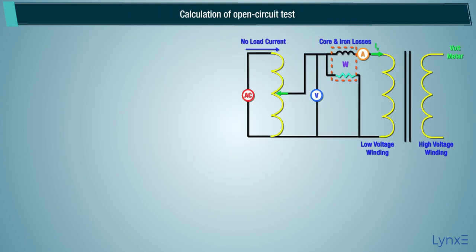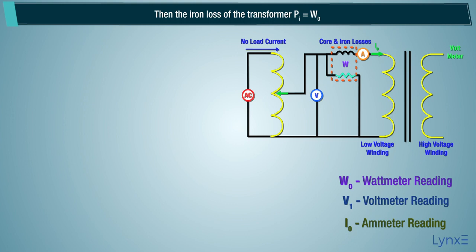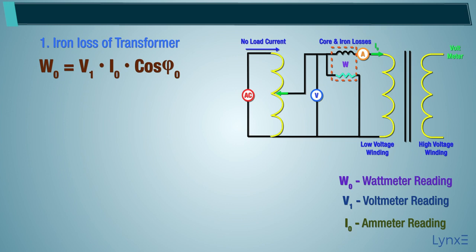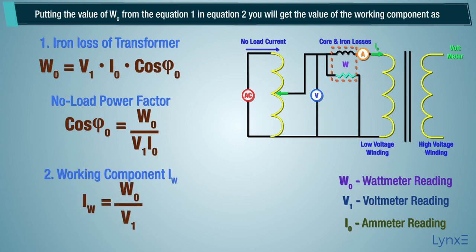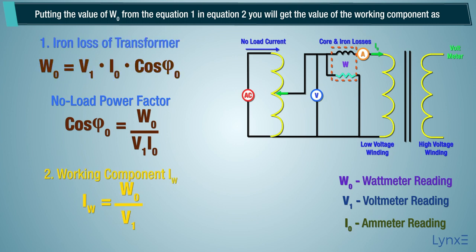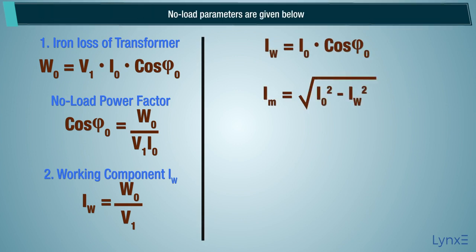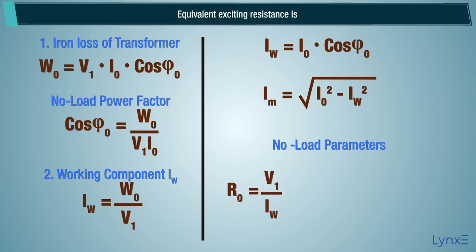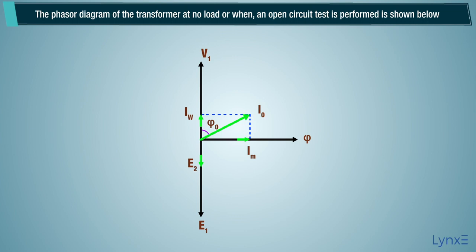Calculation of open circuit test: Let W0 be the wattmeter reading, V1 be the voltmeter reading, and I0 be the ammeter reading. Then the iron loss of the transformer PI equals W0. The no-load power factor is determined, and the working component IW is found by putting the value of W0 from equation 1 into equation 2. The magnetizing component is also calculated. The no-load parameters — equivalent exciting resistance and equivalent exciting reactance — are given by the derived formulas. The phasor diagram of the transformer at no-load or when an open circuit test is performed is shown below. The iron losses measured by the open circuit test are used for calculating the efficiency of the transformer.